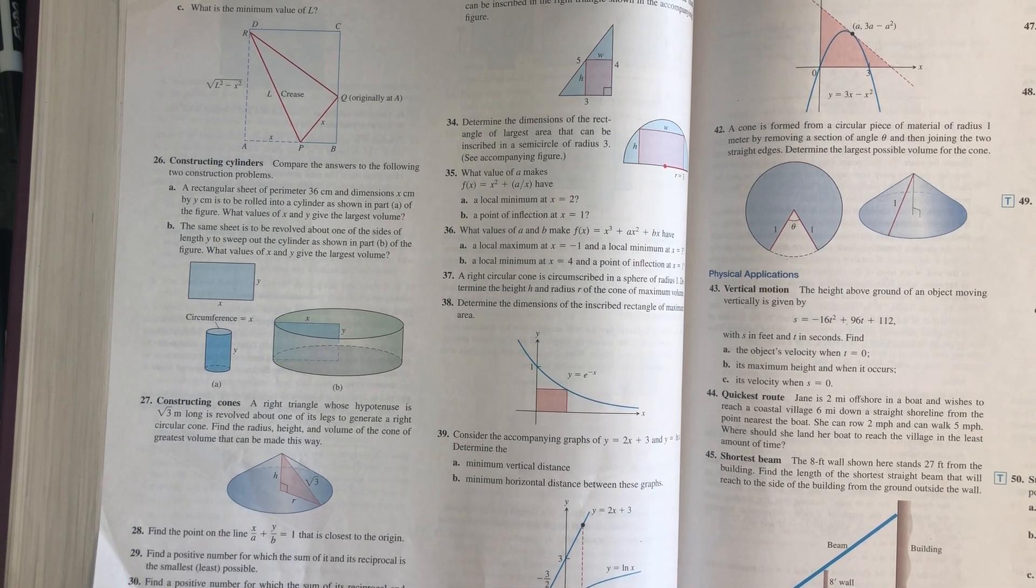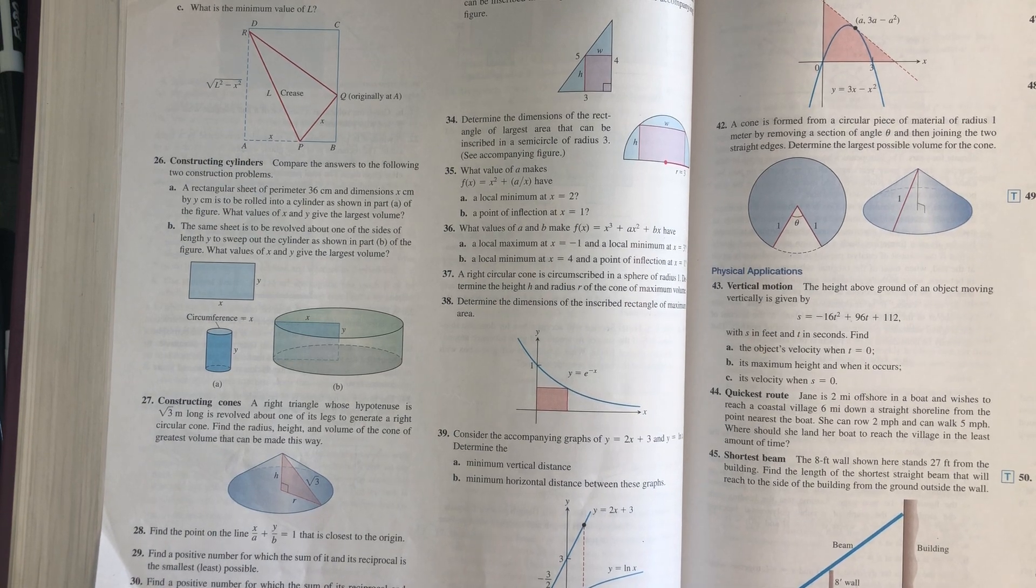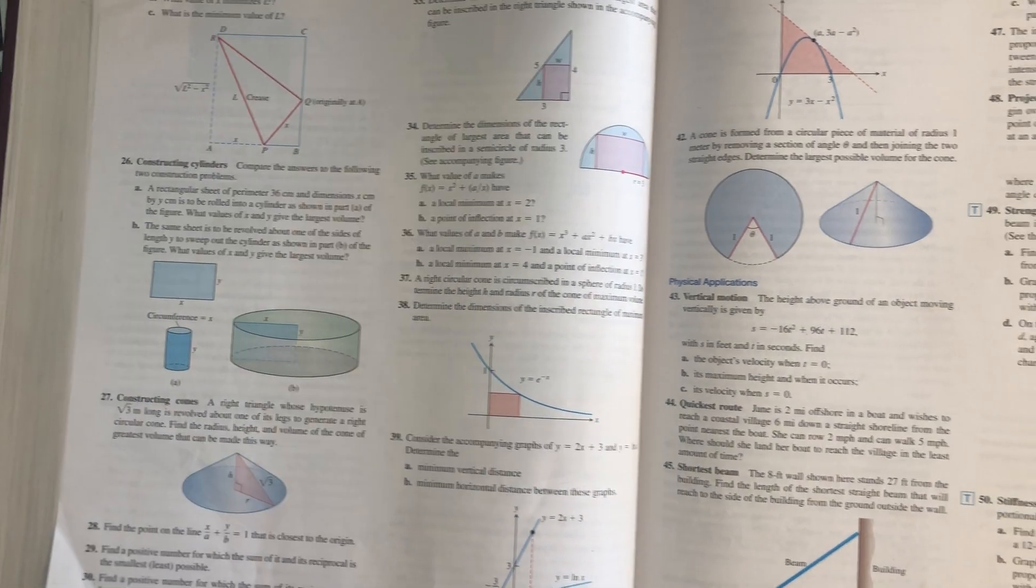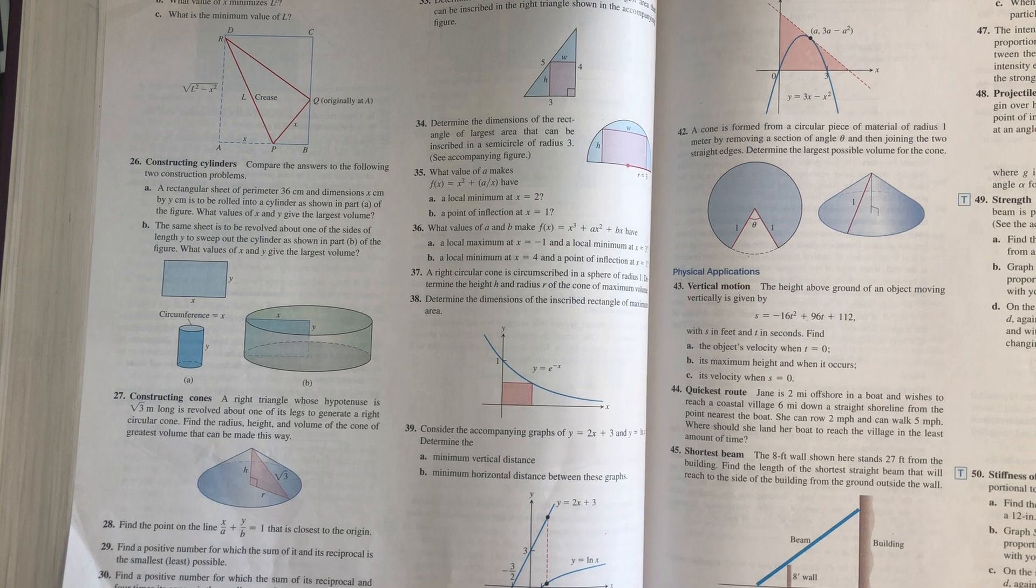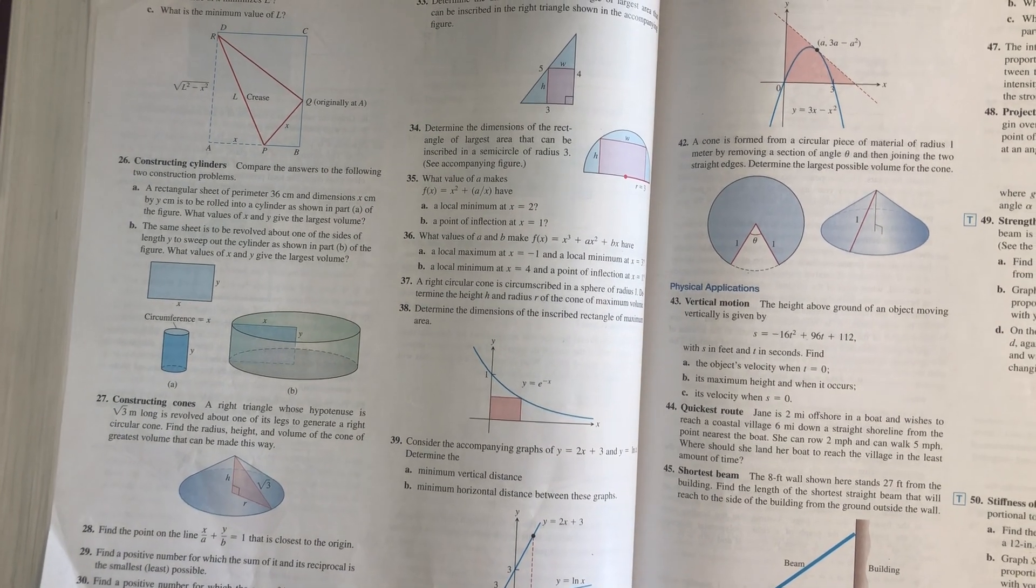A rectangular sheet of perimeter 36 centimeters and dimensions x centimeters by y centimeters is to be rolled into a cylinder as shown in part A of the figure. What values of x and y give the largest volume?